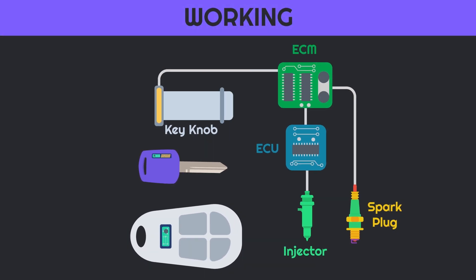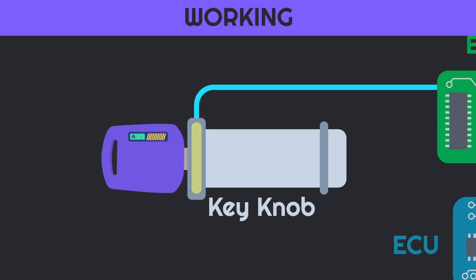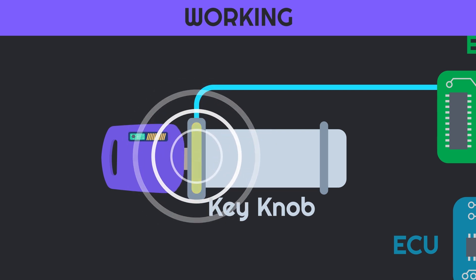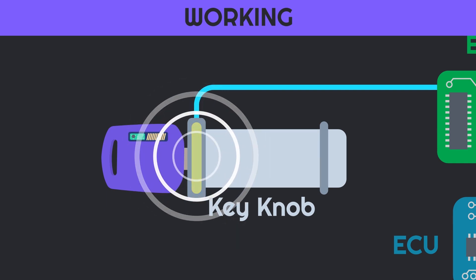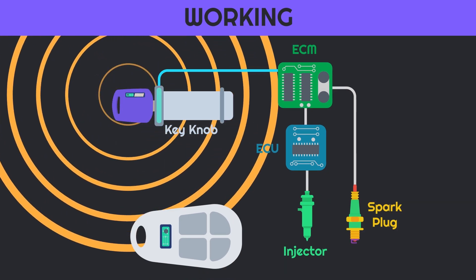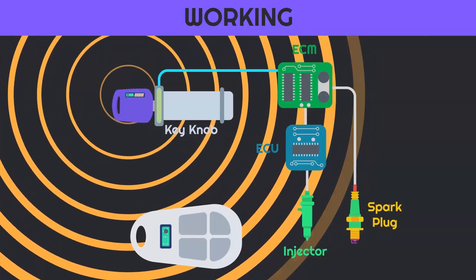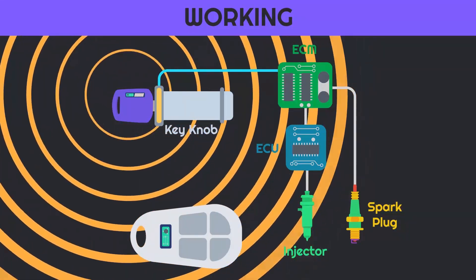When you insert the correct key in your car, the magnetic field generated by the magnetic coil is interrupted by the copper coil inside the key. As per Faraday's law, current is produced inside the coil which powers the transponder. The transponder then broadcasts a special coded signal which is received by the ECU. The ECU identifies the key code, confirms that the key is genuine, and thus starts the ignition as well as the fuel injection system, allowing you to crank and start the engine.